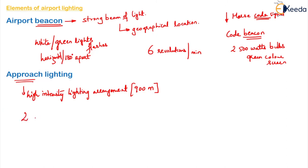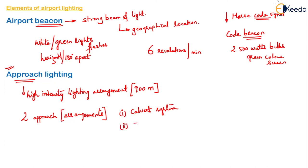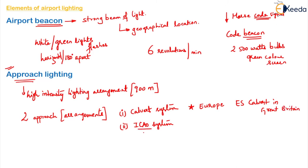There are two arrangements or systems for approach lighting. The first is the Calvert system, and the second is the ICAO system. The Calvert system is widely used in Europe and other parts of the world, and was developed by E.S. Calvert in Great Britain. The ICAO system is also known as the centerline configuration. It has been standardized by the ICAO and is adopted in the United States as the national standard for civil and military aerodromes.